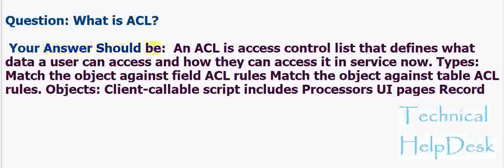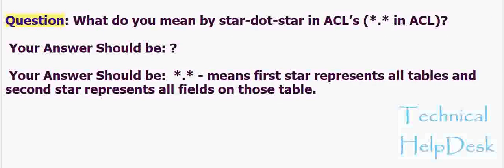Question: What is ACL? Your answer should be: An ACL is an Access Control List that defines what data a user can access and how they can access it in ServiceNow. Types match the object against field ACL rules or table ACL rules. Objects include client callable script includes, processors, UI pages, and records.